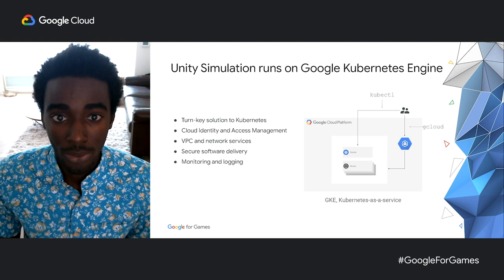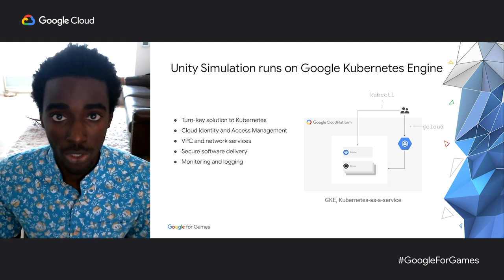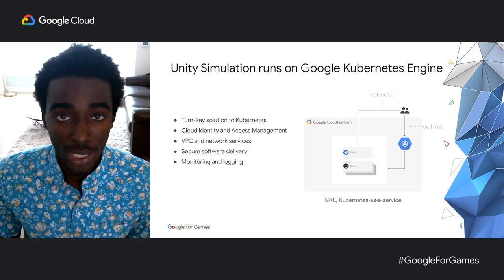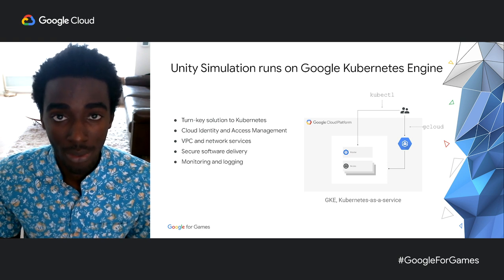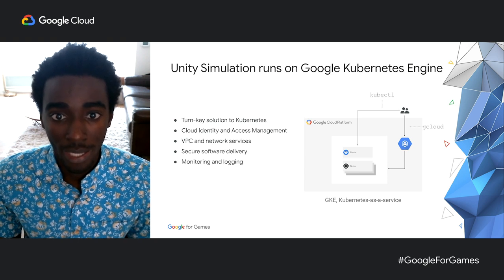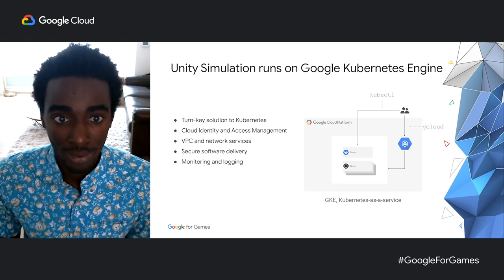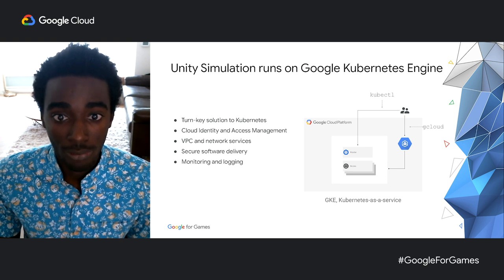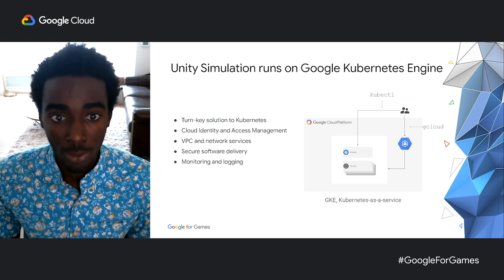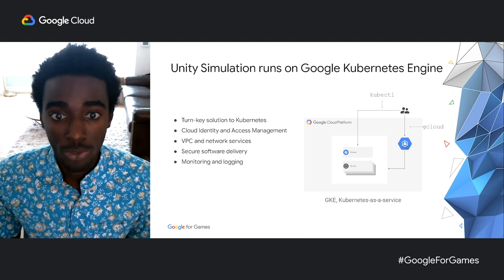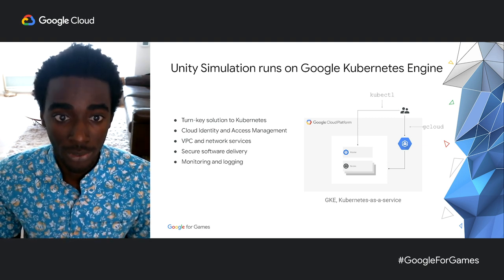Within Google Cloud, Unity leverages Google's turnkey Kubernetes solution, GKE, or Google Kubernetes Engine, which gives Unity developers a secure way to manage and operate simulations at scale. GKE provides strong security defaults, such as encryption at rest and encryption in transit, leading to a more secure environment for Unity developers.